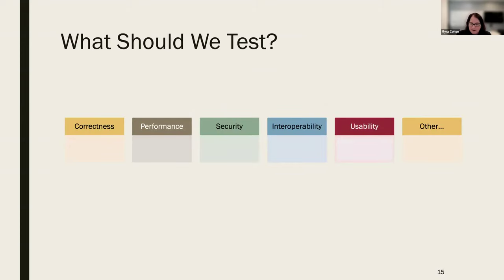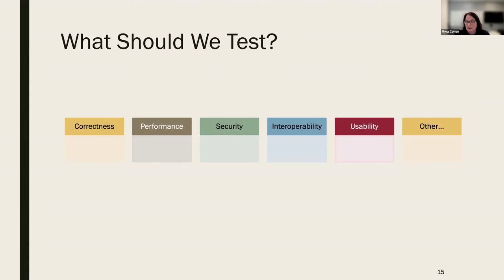There are lots of different things we can test. I just talked about correct results — so I might be thinking about functional correctness. But particularly in scientific environments, performance may be just as important. We may have a fault that gives us the correct answer but takes a really long time to run. We could have faults that lead to security problems — we may have the right answer but have problems with the privacy of our system, or with interoperability or usability. My focus today will be examples around correctness, but some techniques can be used for any of these.